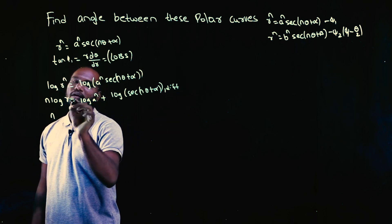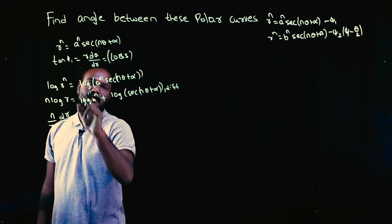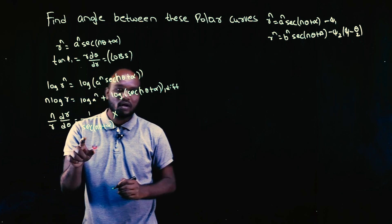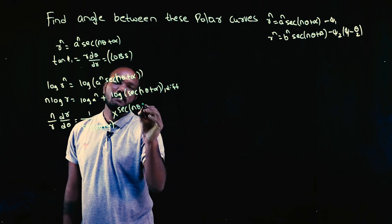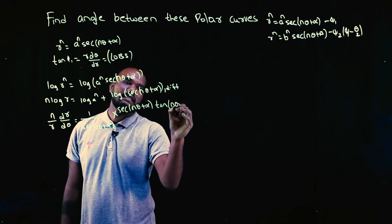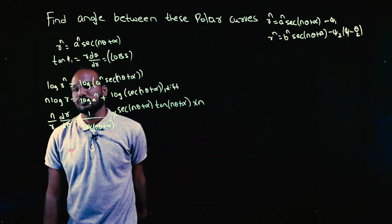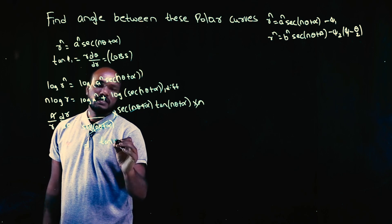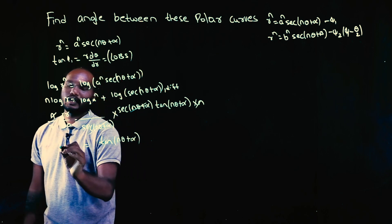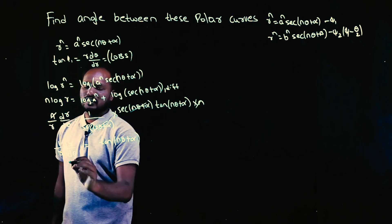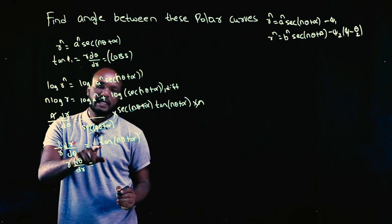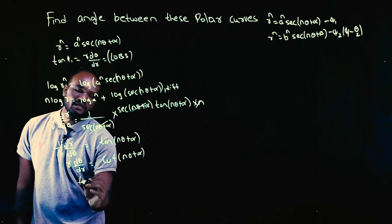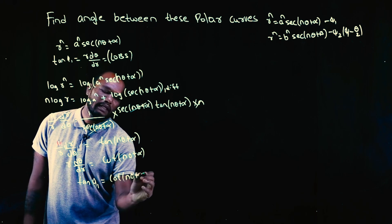Differentiating with respect to θ: n·log(r) differentiates to (1/r)·(dr/dθ). The constant term becomes 0. For log(sec(nθ+α)), the chain rule gives (1/sec(nθ+α)) · sec(nθ+α)·tan(nθ+α) · n. The n's and sec terms cancel, leaving (1/r)·(dr/dθ) = tan(nθ+α). Flipping, r·(dθ/dr) = cot(nθ+α).